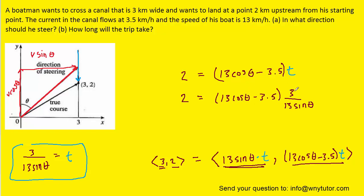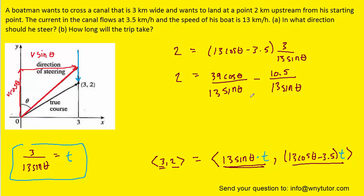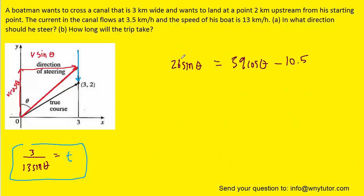And then what we want to do is distribute that 3 over 13 sin theta. And then after performing that distribution, what we can do is clear the fractions by multiplying both sides by 13 sin theta. And so the left hand side is going to become 26 sin theta, and when we distribute the 13 sin theta, it's going to cancel out with those denominators, so we'll have 39 cos theta minus 10.5. Next, we'll go ahead and square both sides of this equation. So here we'll have 676 sin squared of theta, and for this, don't forget that you have to write it out two times and then FOIL it out.